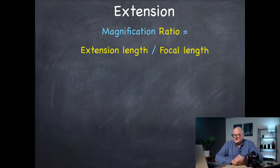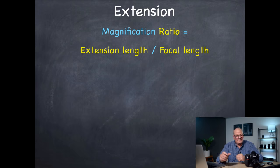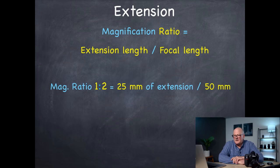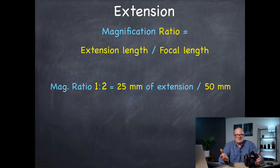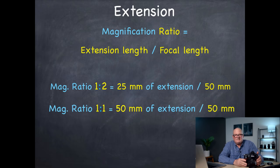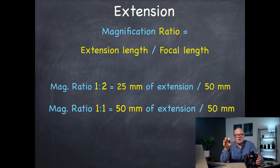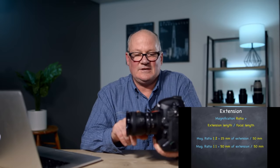Let's see how extension tubes work in terms of magnification. The magnification ratio is determined by the extension length divided by the focal length. To get a one-half life-size or 1:2 ratio, you put 25mm of extension behind a 50mm lens. If you want to get to 1:1, you put 50mm of extension behind a 50mm lens, and now you're at that really close focus — that critical stage of being life-size, one-to-one.